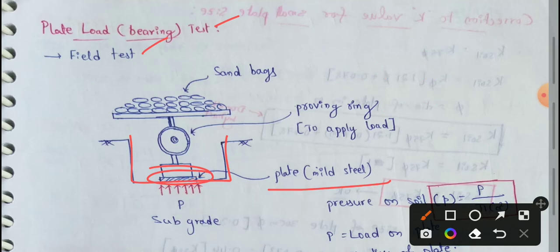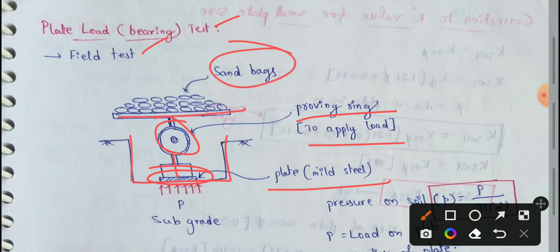Next, we will connect the dial gauge. We use a proving ring to apply loads. We will apply the load onto the plate using this setup.